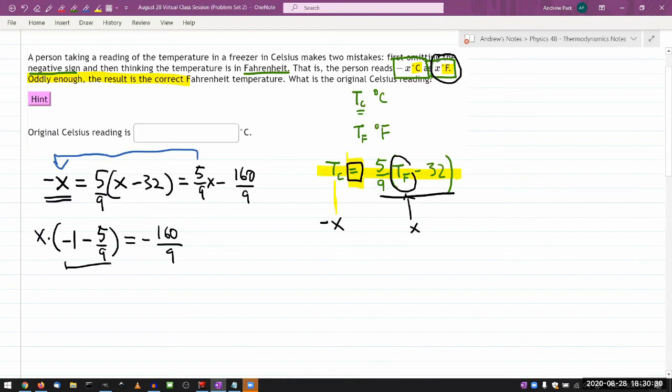So this, just combining that, this is 9 over 9. So it should be minus 14 over 9. So multiply both sides by, I'm trying to cancel out this fraction here. So I would need to multiply by minus 9 over 14. Then some nice things happen. Nines cancel. Minus signs cancel. So X is a positive value, right? And the original Celsius reading will be a negative value.